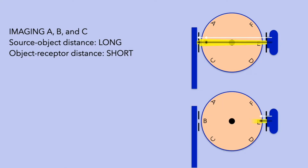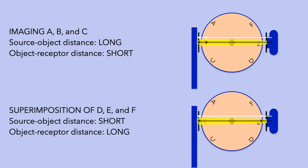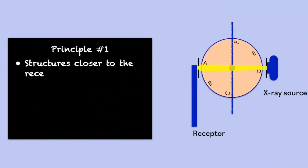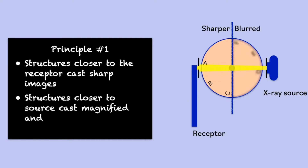In contrast, note that when structures D, E, and F pass through the beam, the source-object distance is short and the object-receptor distance is long. This makes the images of structures D, E, and F magnified and markedly unsharp. So principle number one of panoramic imaging: structures closer to the receptor cast sharp images, whereas structures closer to the source cast magnified and blurred images.